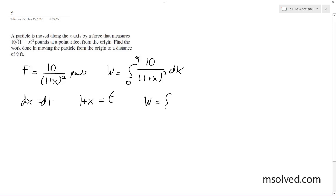So rewriting this, we have W equals the integral from 1 to 10 of 10t to the negative 2 dt.